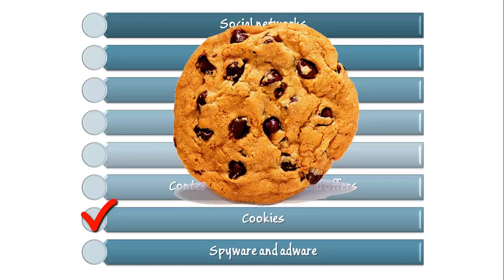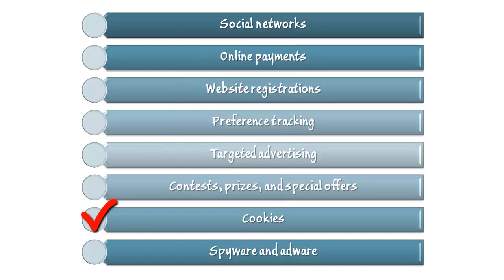Cookies also represent an Internet-based threat to privacy. By design, the Internet is largely an anonymous realm — under normal circumstances, a website would be entirely unaware of the other websites that a user has recently visited. Tracking cookies, however, are commonly used to defeat this anonymity. A number of different websites might opt to participate in the same tracking cookie program. As a web user navigates from one participating website to the next, cookies are used to track and record her actions, which can then be transmitted and stored. All of the participating websites may then be granted access to the user's preference data, or the data may be sold to third-party companies for targeted advertising.